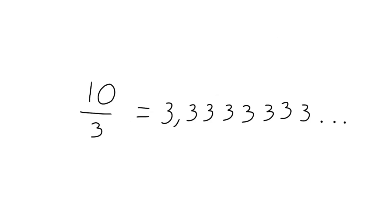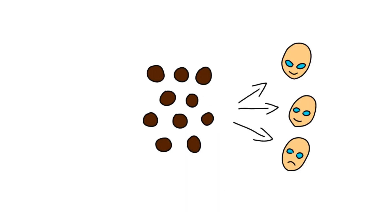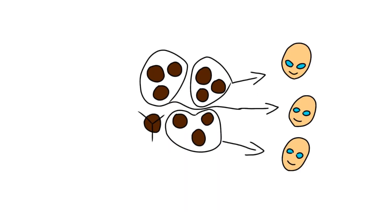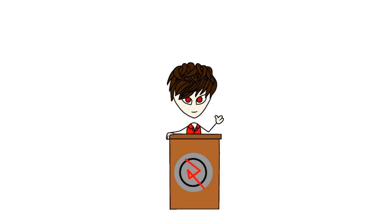Base 10 makes multiplication, division, and other everyday maths harder for no good reason — at least in my opinion. For example, try to divide 10 cookies among 3 or 4 siblings. 10 simply doesn't split neatly into 3 or 4.